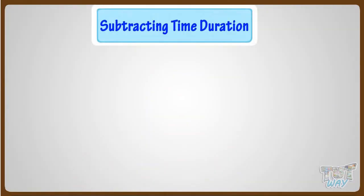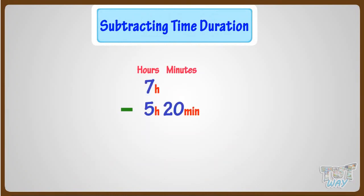Kids, now let's learn how we can subtract time. We have to subtract 5 hours 20 minutes from 7 hours 45 minutes. While subtracting time, the same rule is to be followed: subtract hours from hours and minutes from minutes.